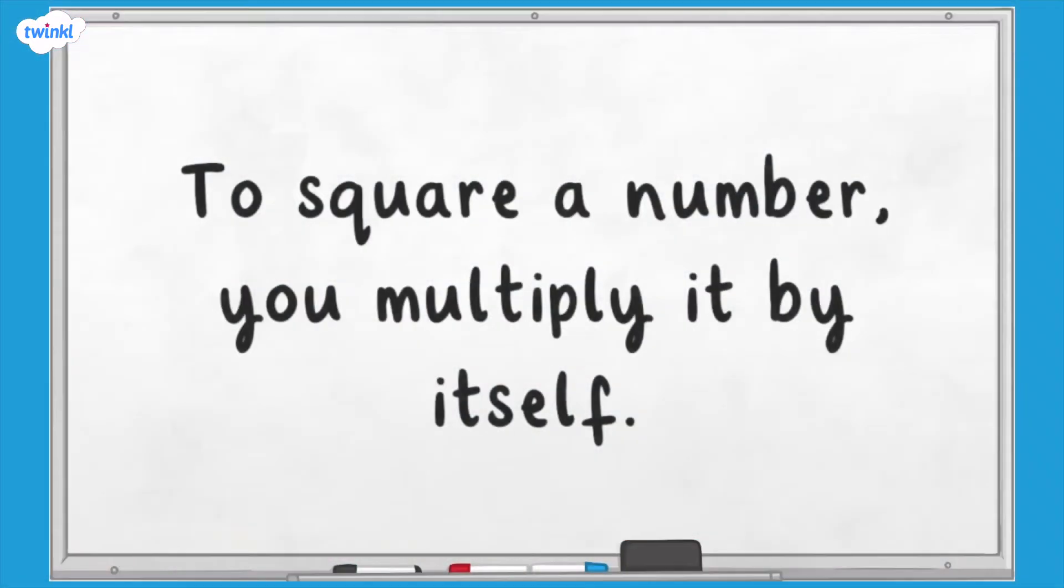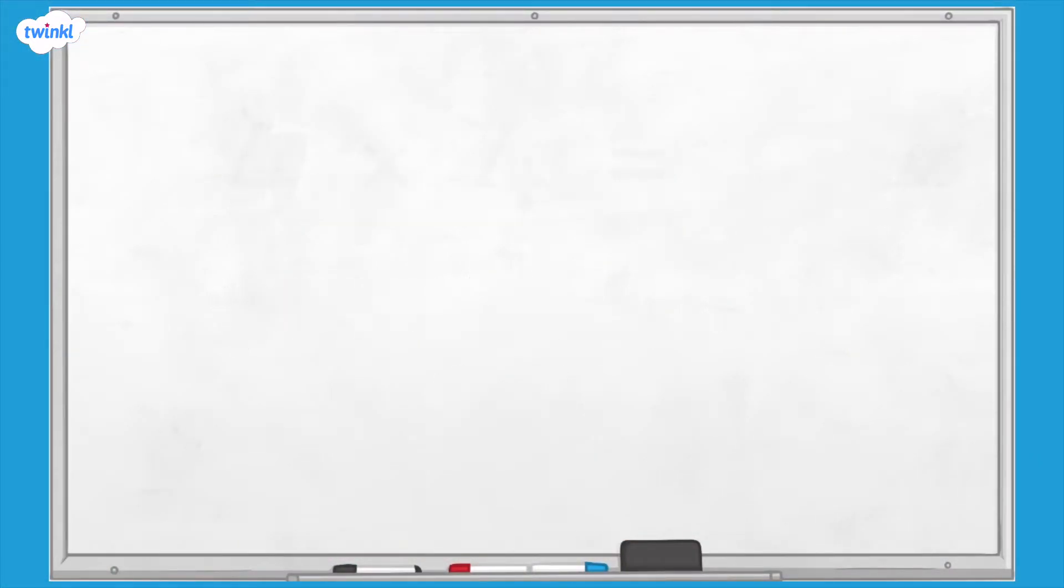When we multiply a number by itself, we can also say that we square it. 4 times 4 is 4 squared.